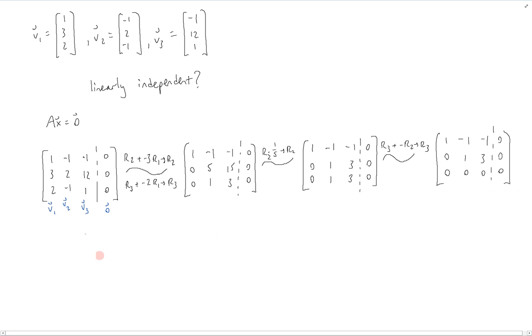And to complete the row reduction, we're going to take row 1 and add row 2 to it to get this final form. Now this tells us that we have a solution of the form x1 plus 2x3 equals 0, and x2 plus 3x3 equals 0.